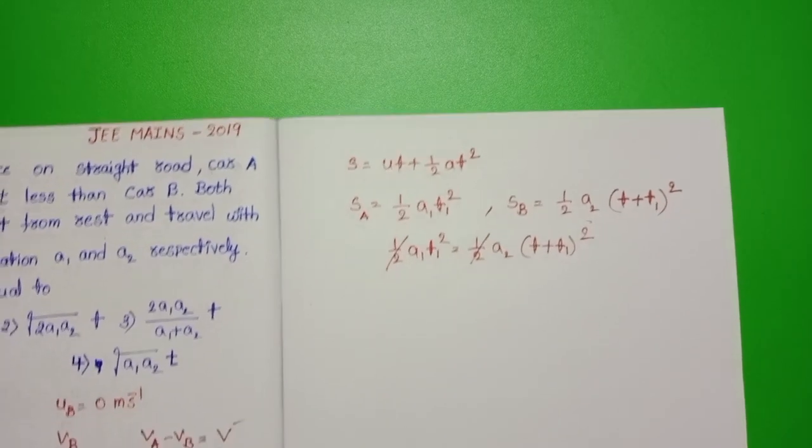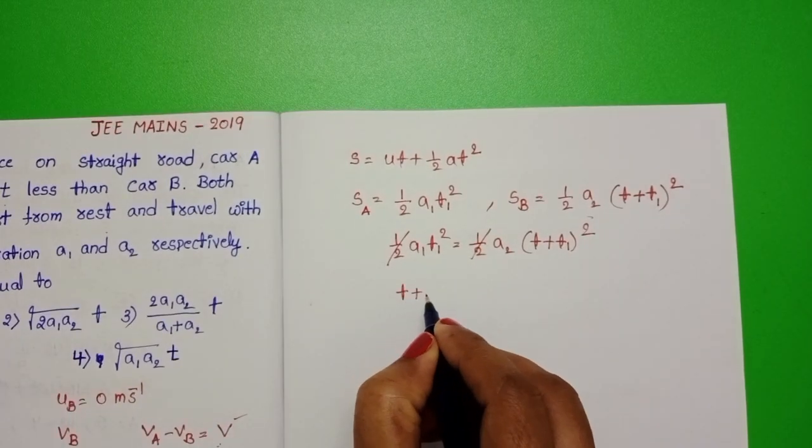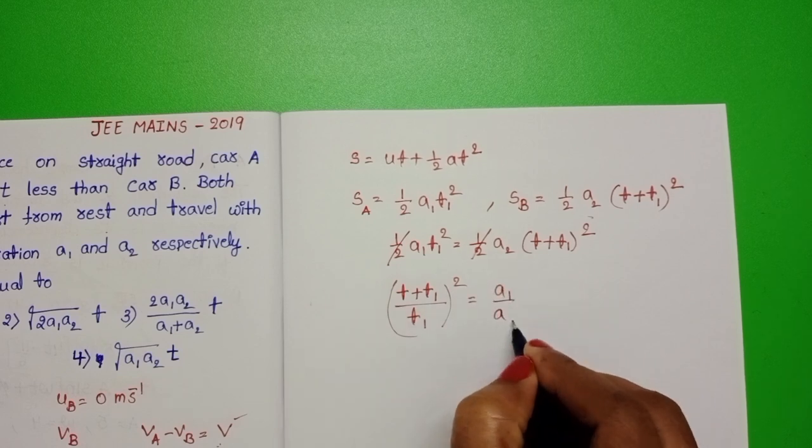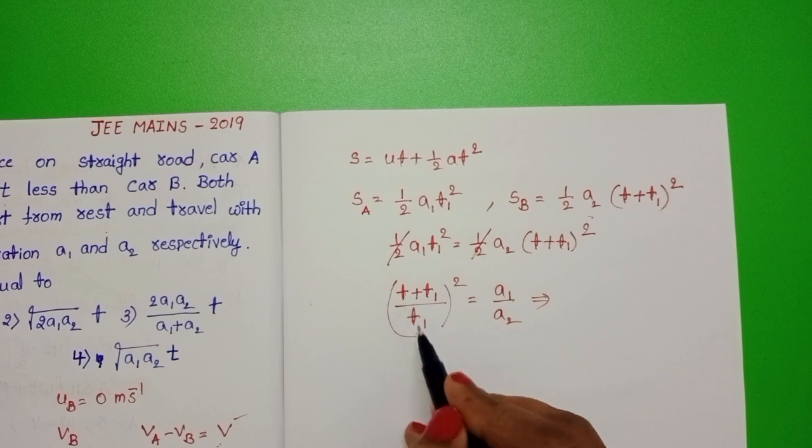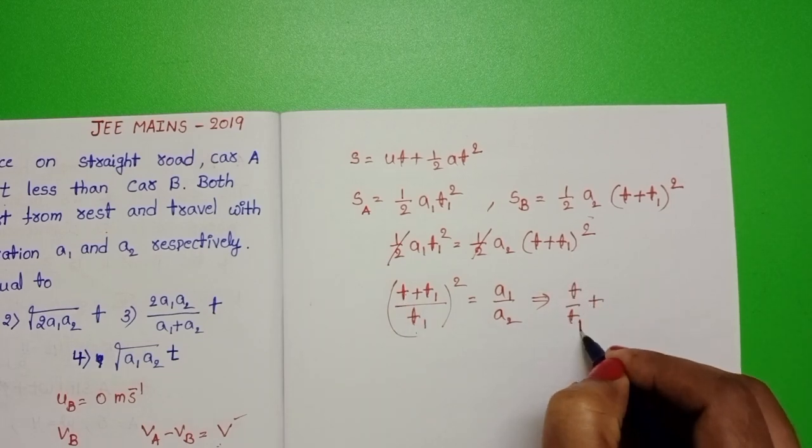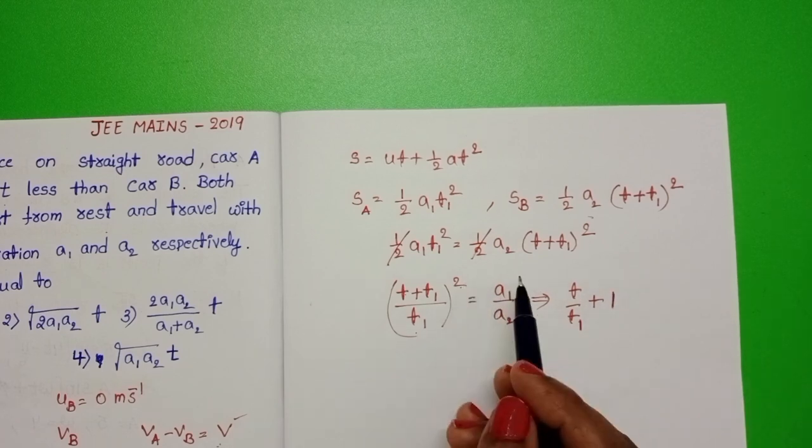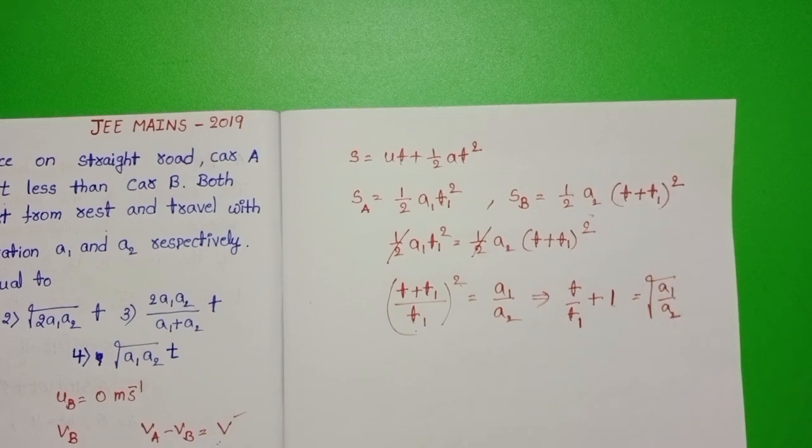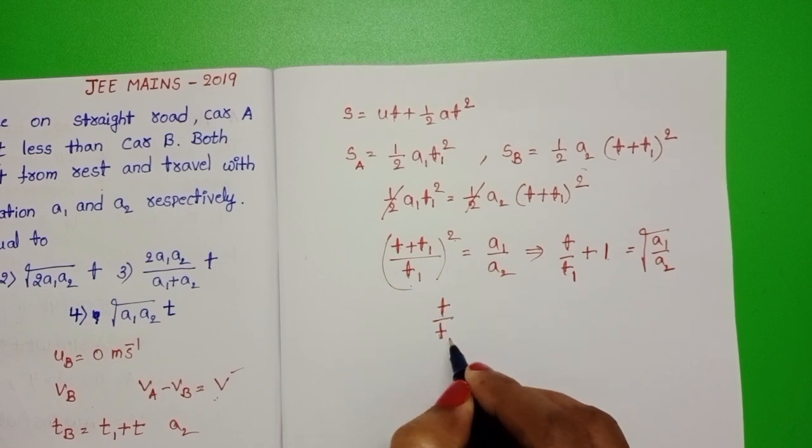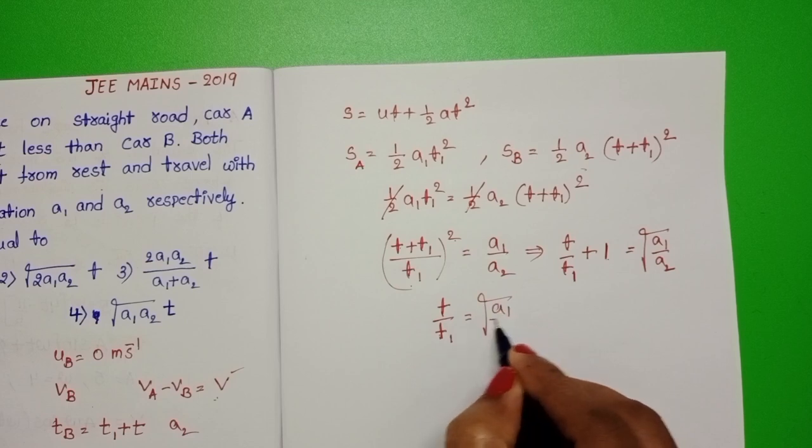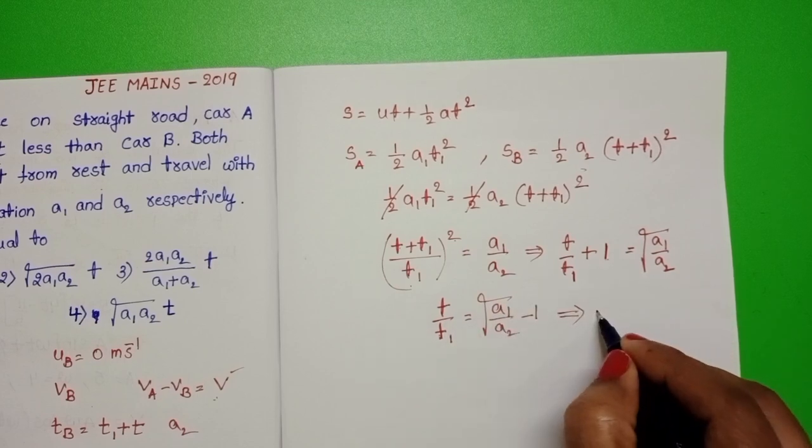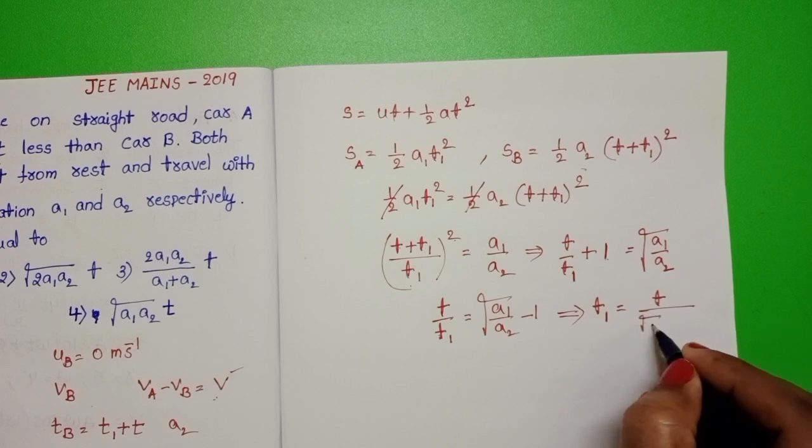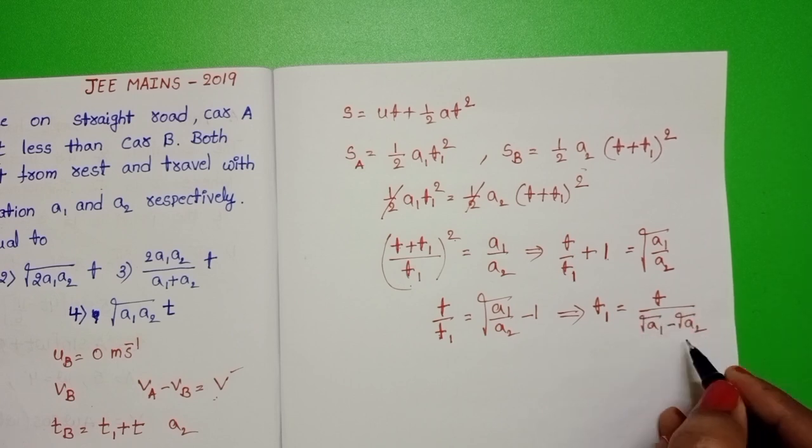On both sides, half get cancelled. T plus T1 by T1 whole square is equals to A1 by A2. And from this, T by T1 plus T1 by T1 becomes 1 and this square goes to RHS. It becomes square root. And take plus 1 to RHS. T by T1 is equals to square root of A1 by A2 minus 1. And from this, T1 is equals to T by, directly take the LCM also. Root A1 minus root A2 by root A2. So, root A2 goes to numerator.